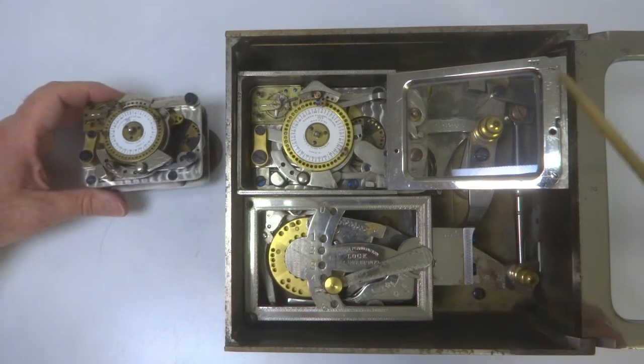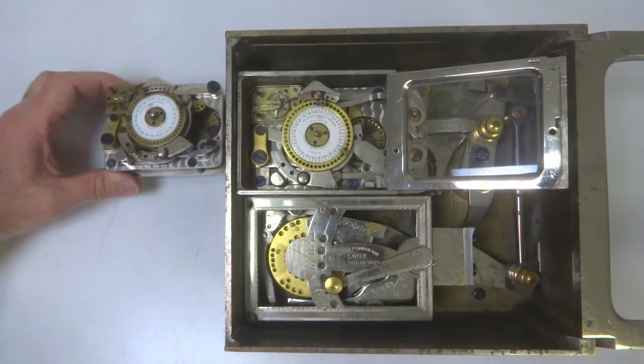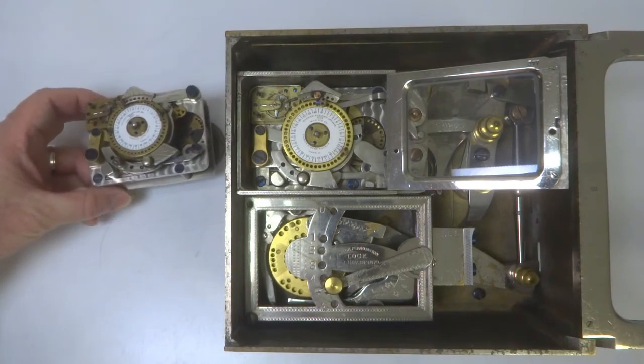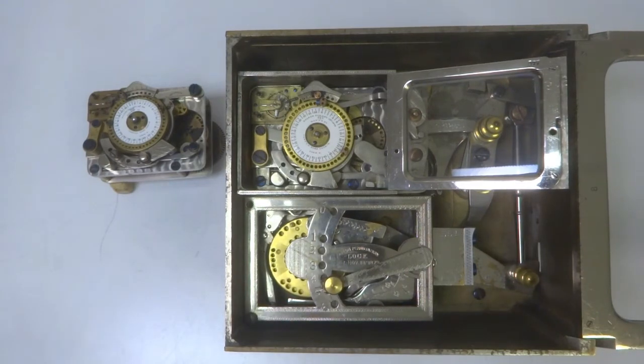This Dalton triple guard that you see here was the most complicated and the most expensive time lock ever made. In its day, it cost $600, which in today's money would be something like around, I believe, $12,000 to $14,000.